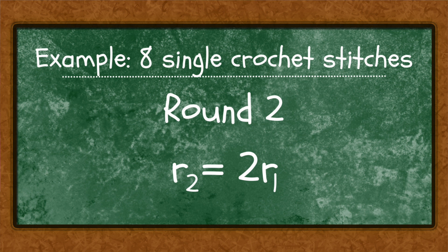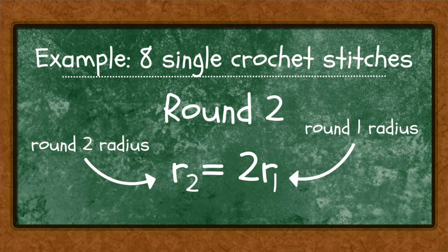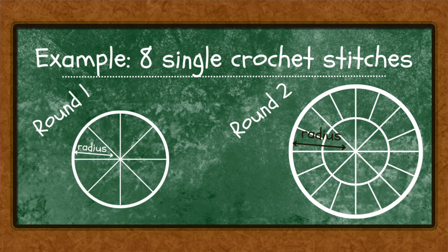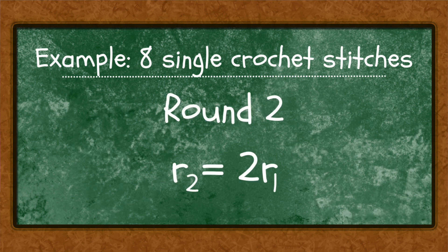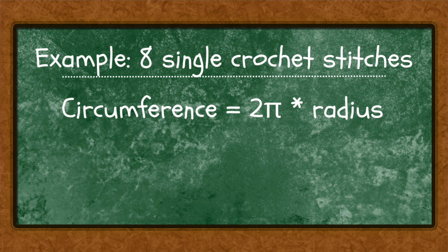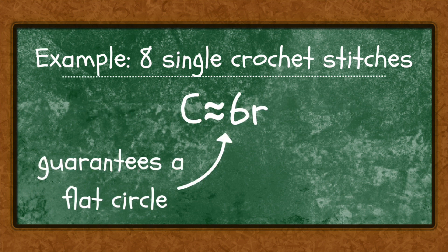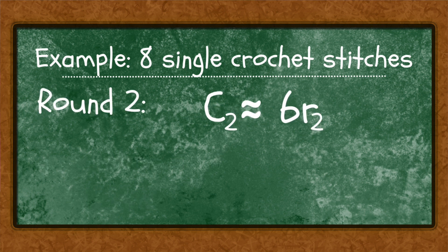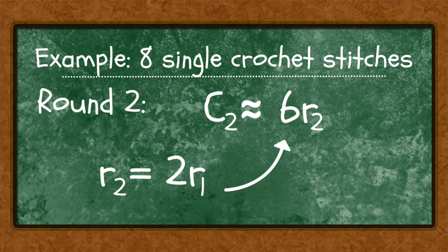For round two, the radius is going to be two times as big as the radius from round one — because round one the radius is the height of one stitch, but when we work two rounds the radius is the height of two stitches. Plugging into our formula: the circumference of round two equals six times the radius of round two. Since the radius of round two is two times the radius of round one, we can say the circumference of round two equals six times two times the radius of round one.